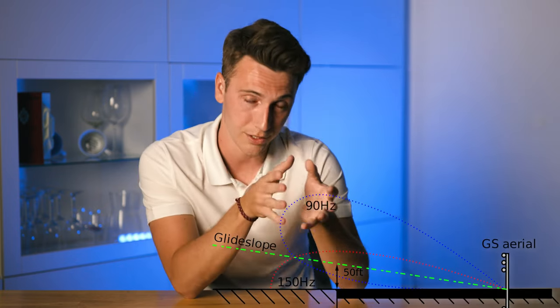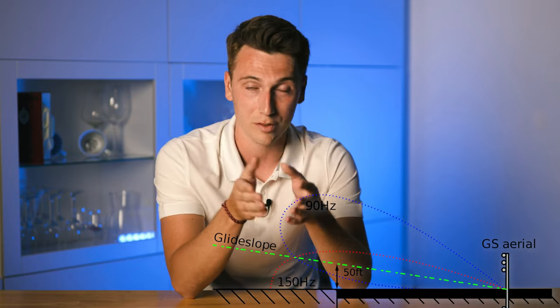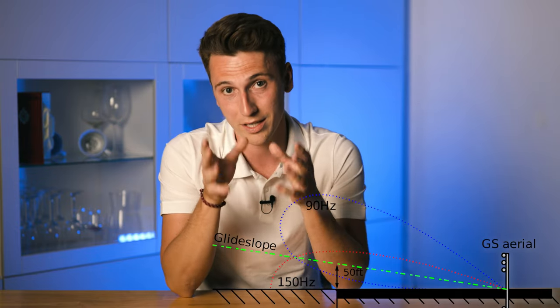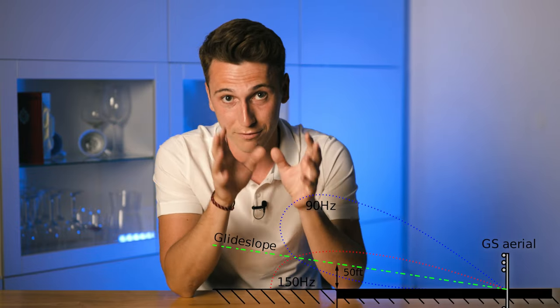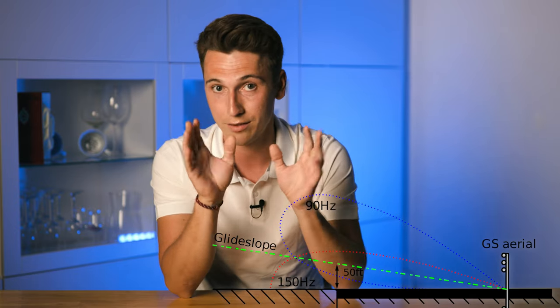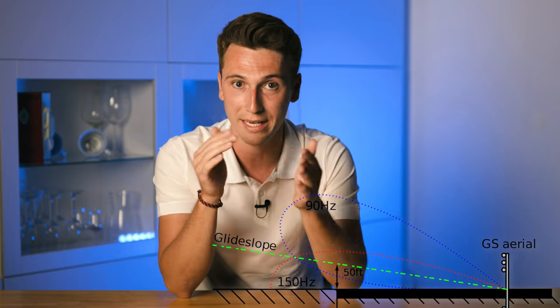Then there's the glideslope antenna. That one is positioned right next to the touchdown zone, and it looks like that. It uses, again, the two frequencies at 150 Hz and 90 Hz, but this time they flip vertically — so the 150 Hz is the bottom part and the 90 Hz is the top part. The middle of the trajectory will then define the glide path, typically a three-degree glide path angle — the most common in approaches all over the world, though it can vary by a few degrees.